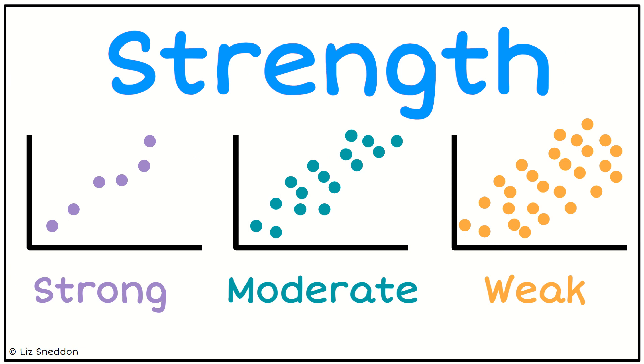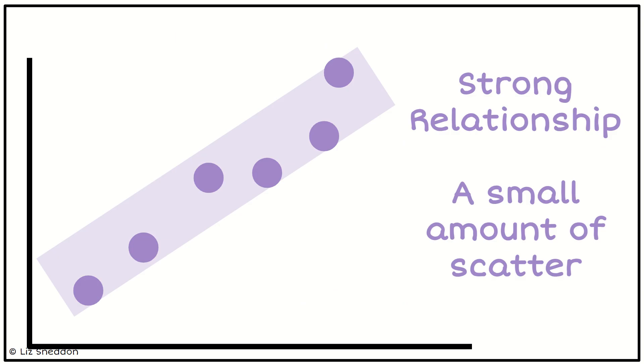We talk about a nice strong relationship when we can see those points are all very close together, moderate when there's a bit more variation, a bit more scatter, and weak when there's a lot more scatter going on. That's how we justify this by looking at how much scatter we have.